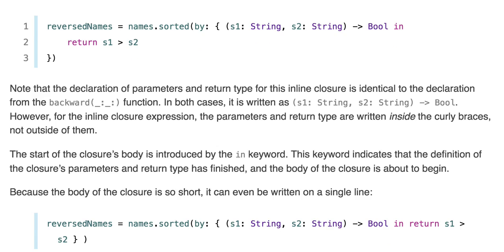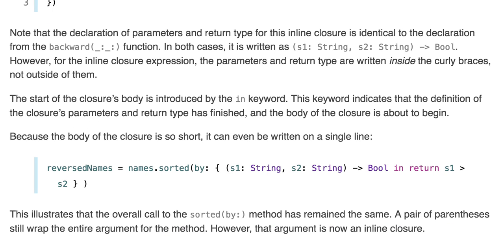Because the body of the closure is so short, it can even be written on a single line. This illustrates that the overall call to the sorted(by:) method has remained the same, and a pair of parentheses still wrap the entire argument for the method. However, the argument is now an inline closure.